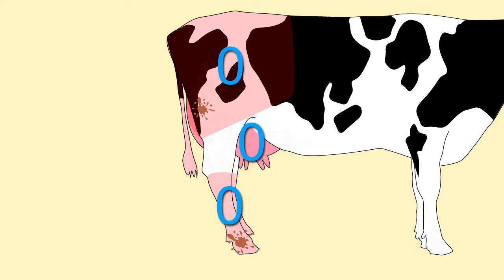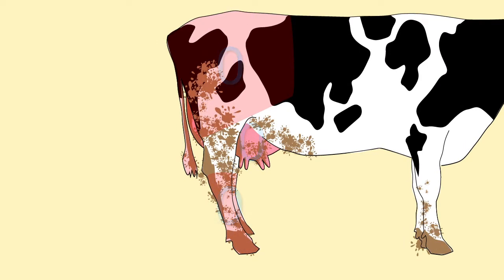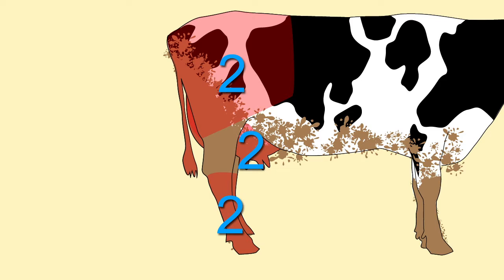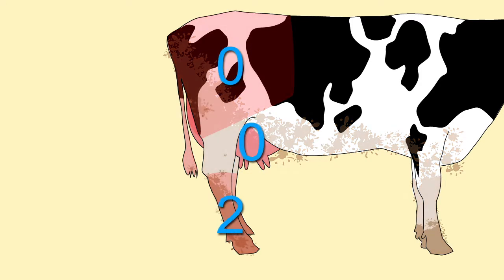If there's more than a palm-sized amount of dirtiness, score a one. If there's more than a forearm length of dirtiness, then score a two. Any score of two suggests there's a problem with shed hygiene.